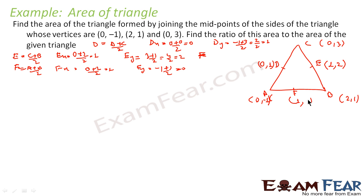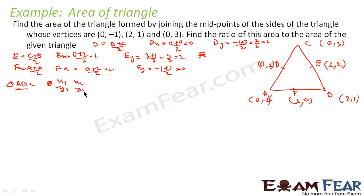Now we have to find the area of triangle ABC and triangle DEF. For triangle ABC, using the formula with points X1, Y1; X2, Y2; X3, Y3 and back to X1, Y1: the points are (0, -1), (2, 1), (0, 3), and again (0, -1).